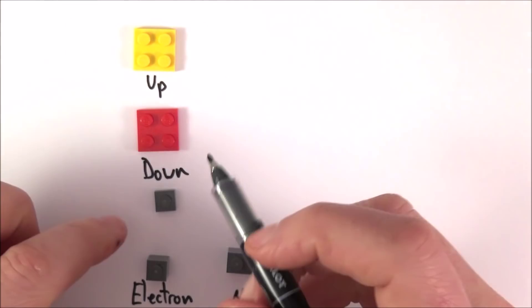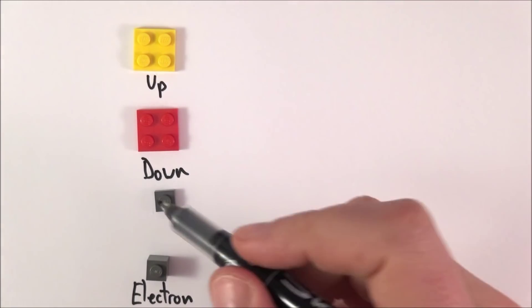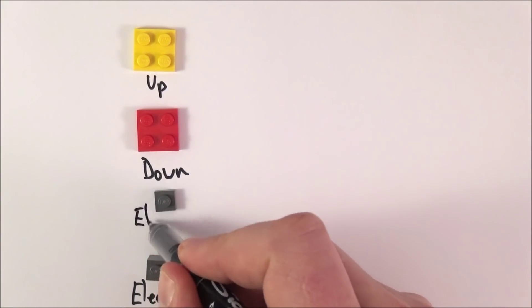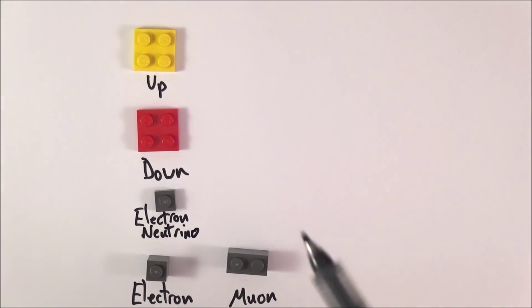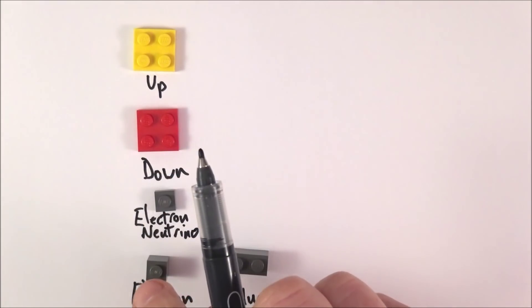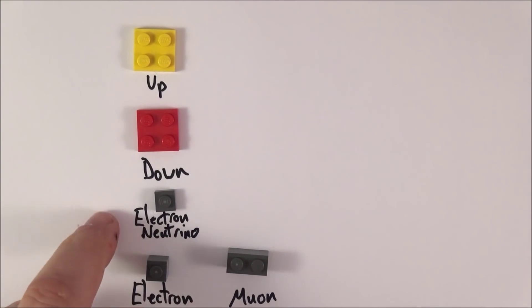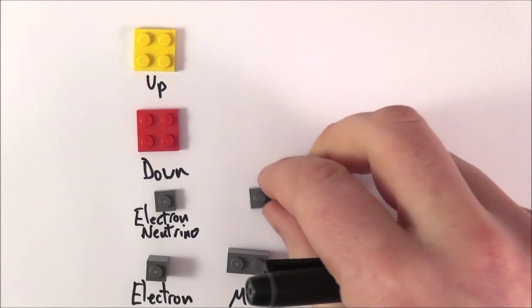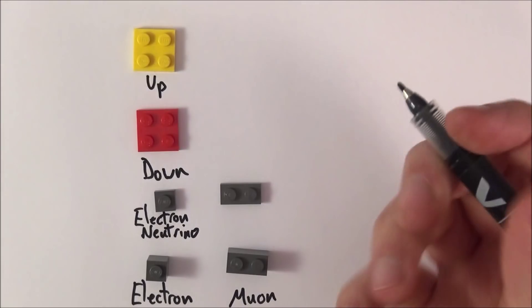Because they had no charge, they were called neutrinos. Neutron being neutral, and effectively they're very small. What I have here, this little gray thing, is my electron neutrino. So we have an electron neutrino, the electron, a muon. If we have an electron neutrino, does that mean we also have a muon neutrino? It does, yeah.